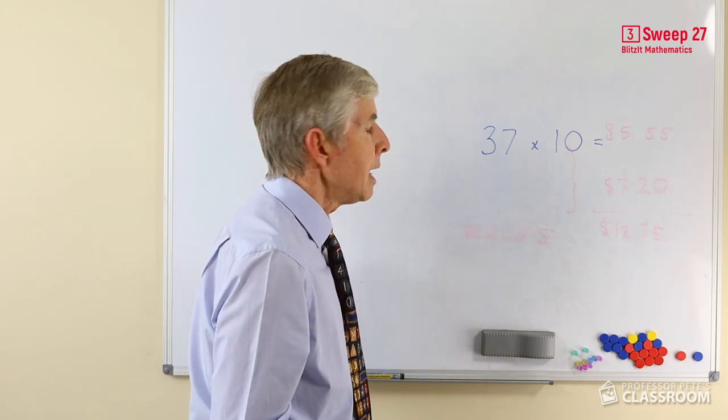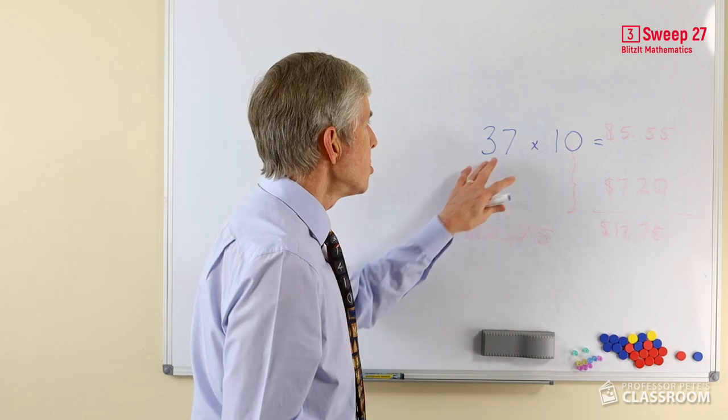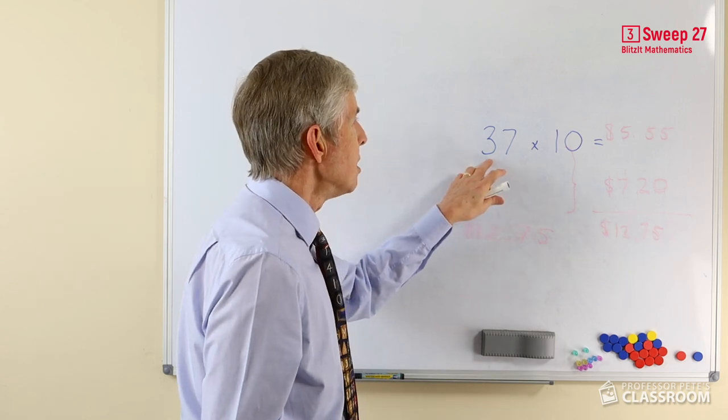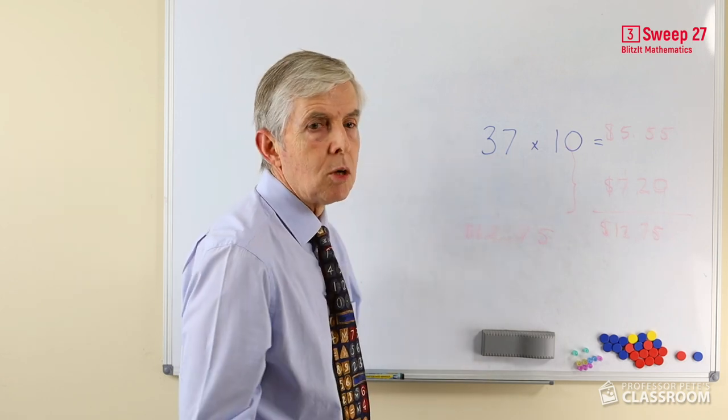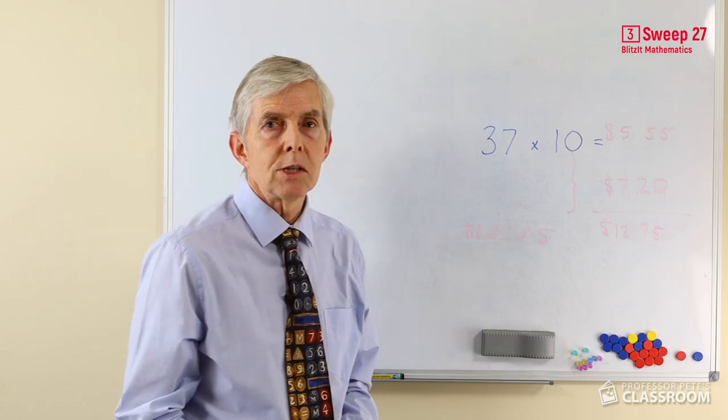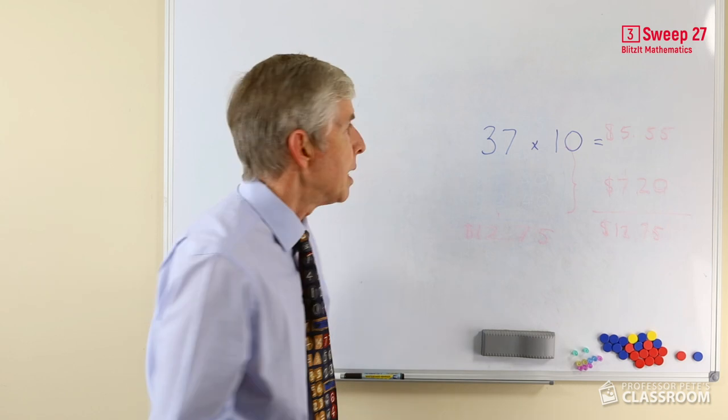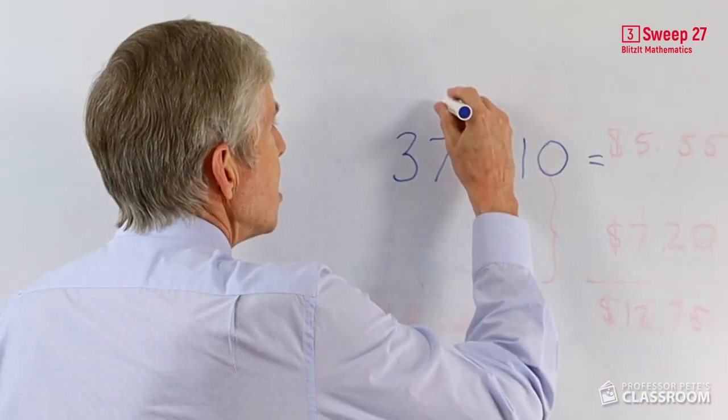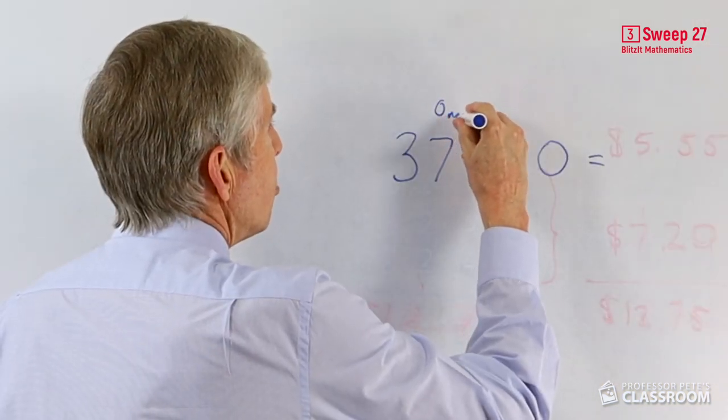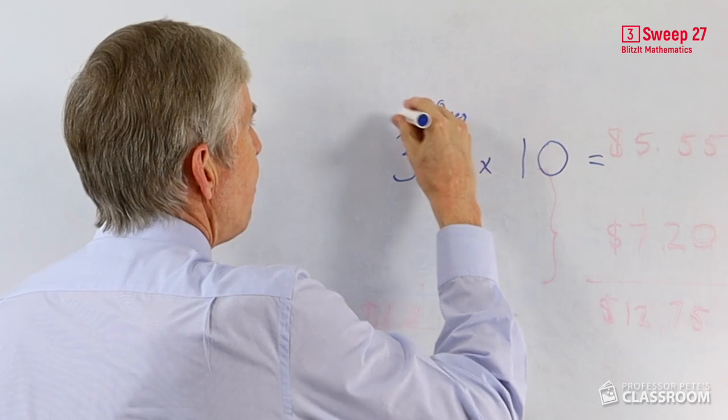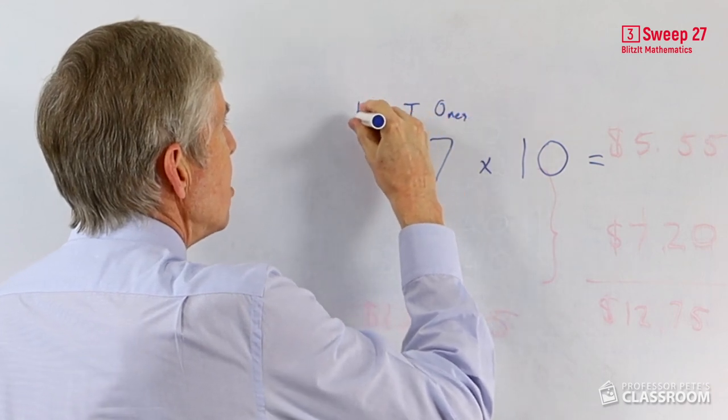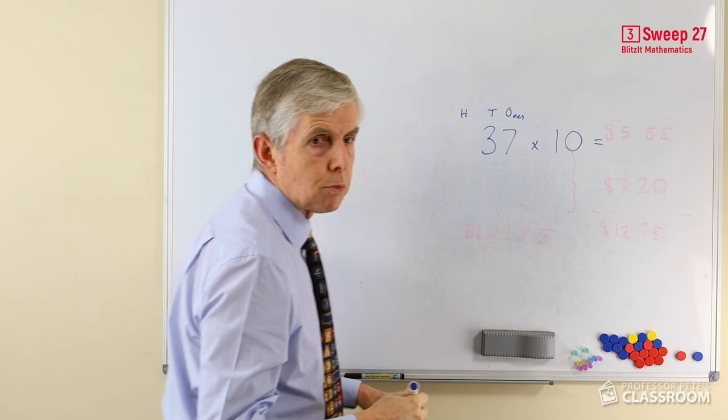So 37 × 10: we're multiplying by 10, we've got two digits. We have 30 × 10, we have 7 × 10. Those digits will be in the answer but in different places. I'm going to label this with an O—ones—and a T for tens and an H for hundreds.